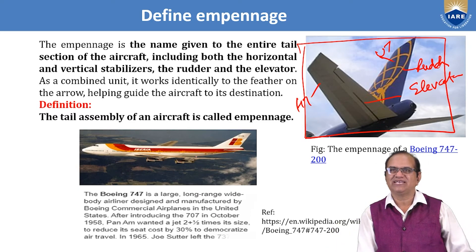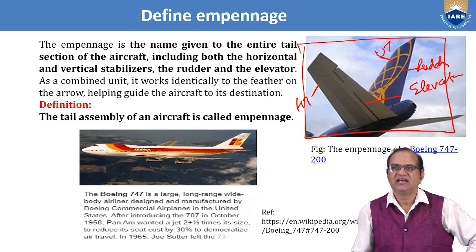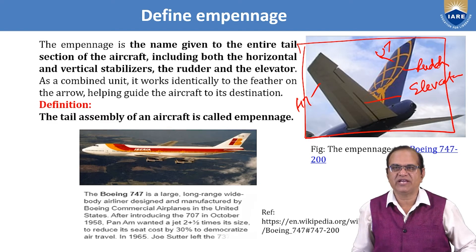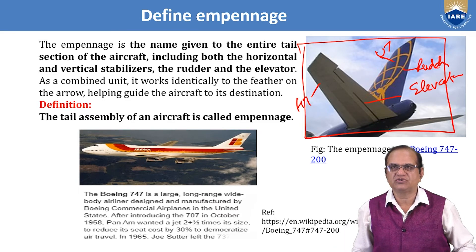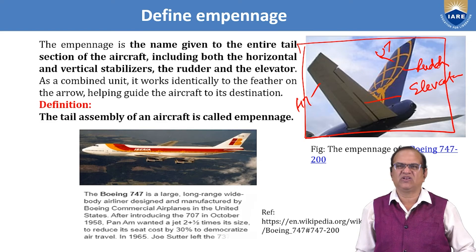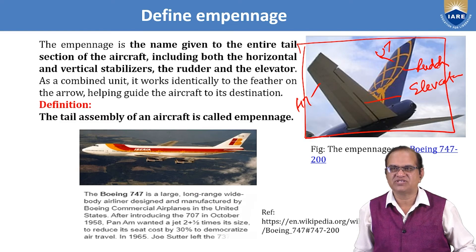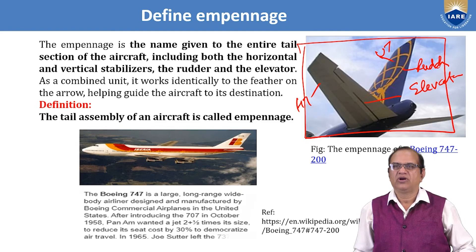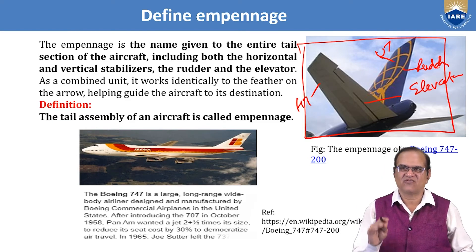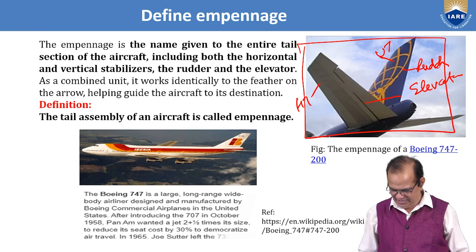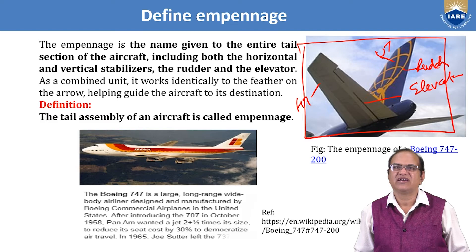Here I have shown the Boeing 747. It is a large, long-range, wide-body airliner designed and manufactured by Boeing Commercial Airplanes in the United States. After introducing the 707 in October 1958, Pan Am wanted a jet two and a half times its size to reduce seat cost by 30 percent and democratize air travel. In 1965 this aircraft was developed.